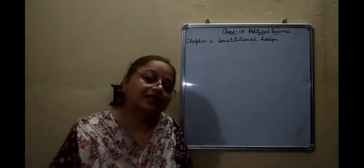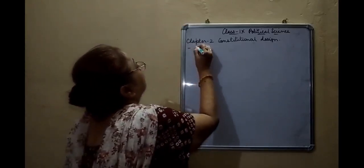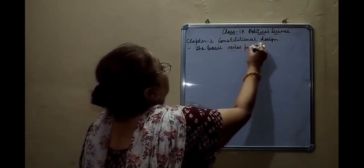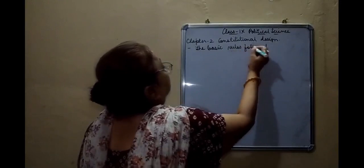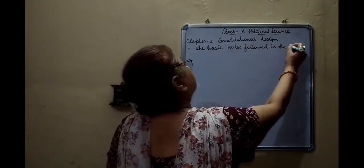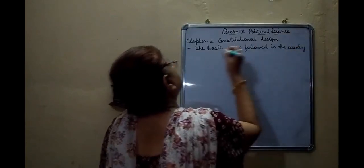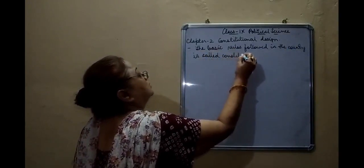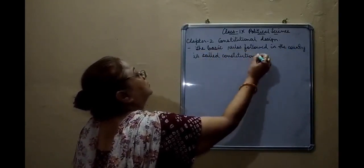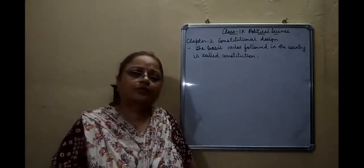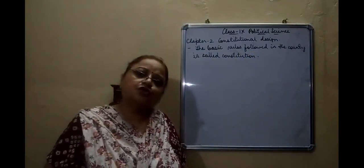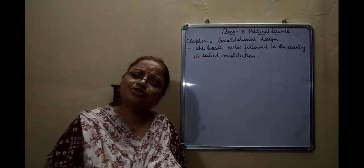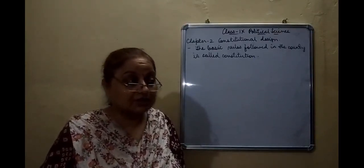Where we stopped in the last class: the basic rules followed in a country are called a constitution. This constitution is needed. The topic we were doing is — why do we need a constitution?